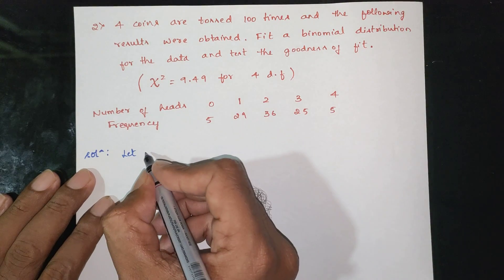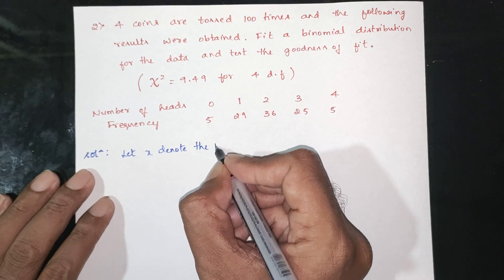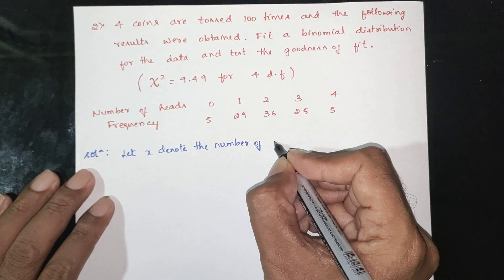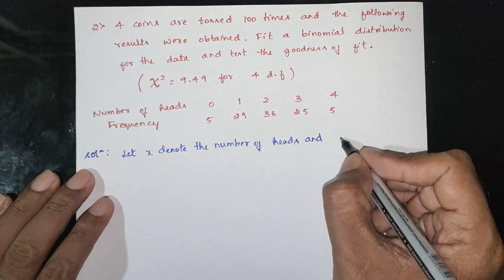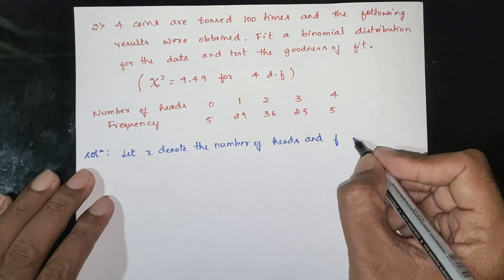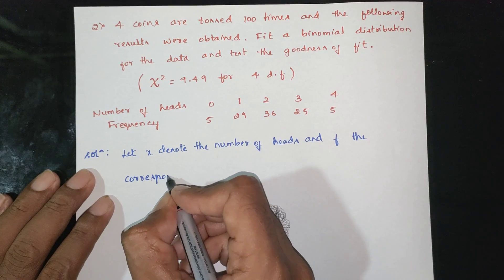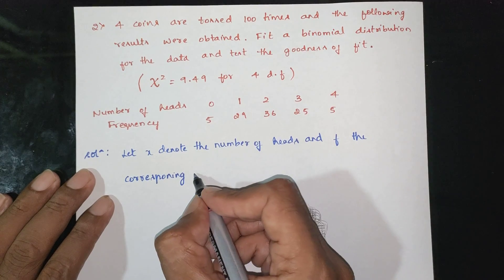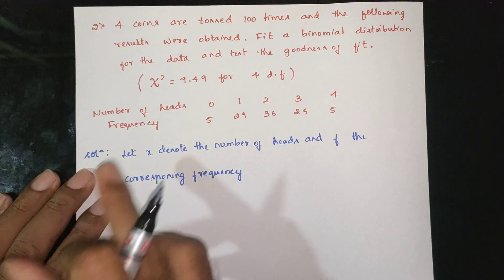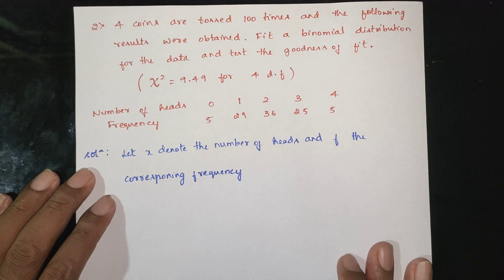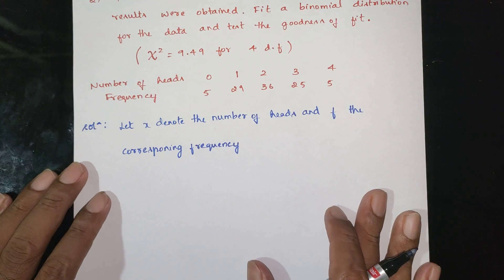Let x denote the number of heads. We need to find the corresponding theoretical frequency using the binomial frequency distribution. In a binomial frequency distribution, we can find the probability.